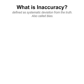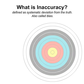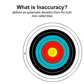In contrast, inaccuracy is the systematic deviation from the truth. Arrows hit far from the bull's eye are considered inaccurate. Inaccuracy is also called bias.